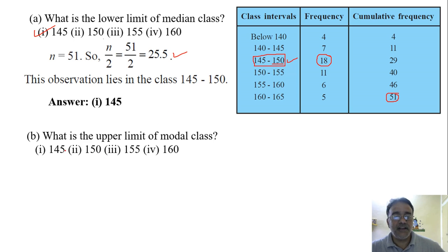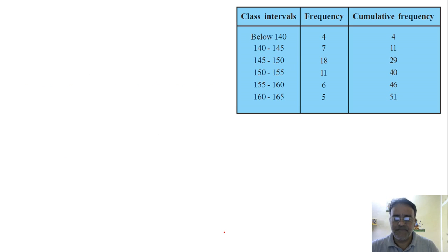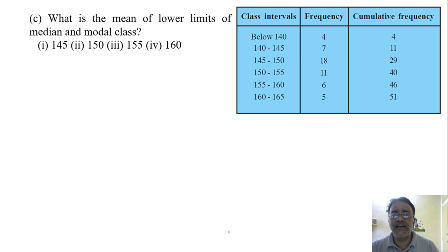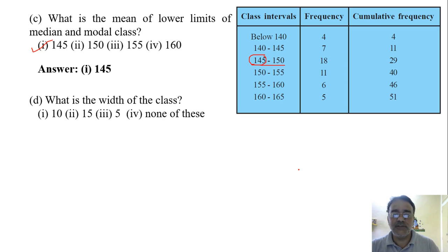Next question is: What is the mean of lower limits of median and modal class? Median and modal class are the same, so we'll get the lower limit of median class is 145 and the modal class is also 145. So 145 plus 145 divided by 2, that is 290 divided by 2, we will get 145 only. So the correct answer is 145.